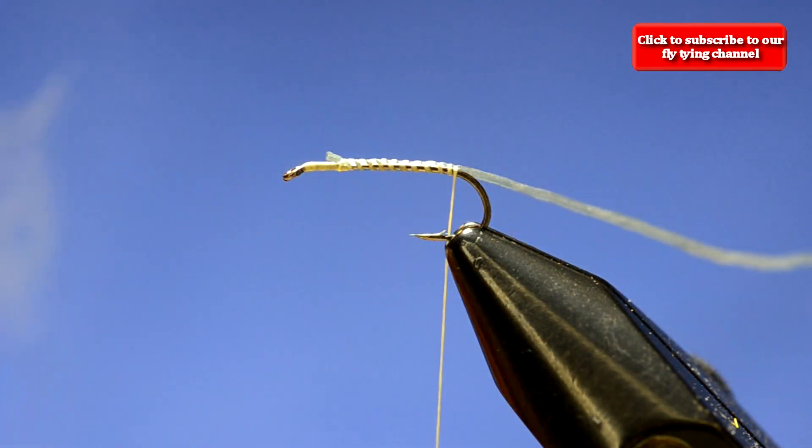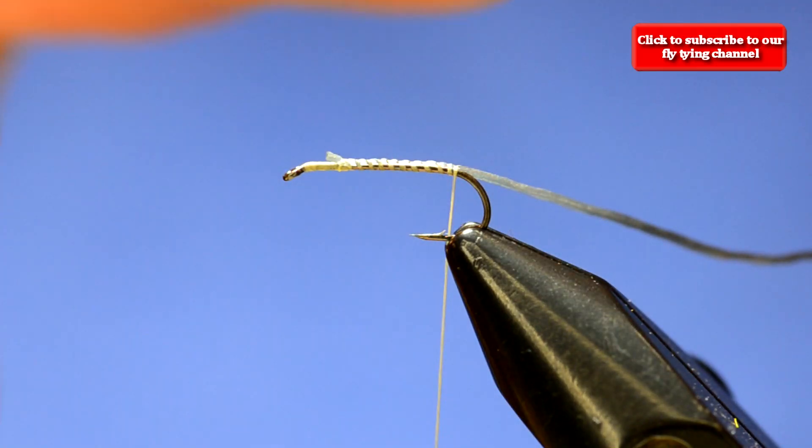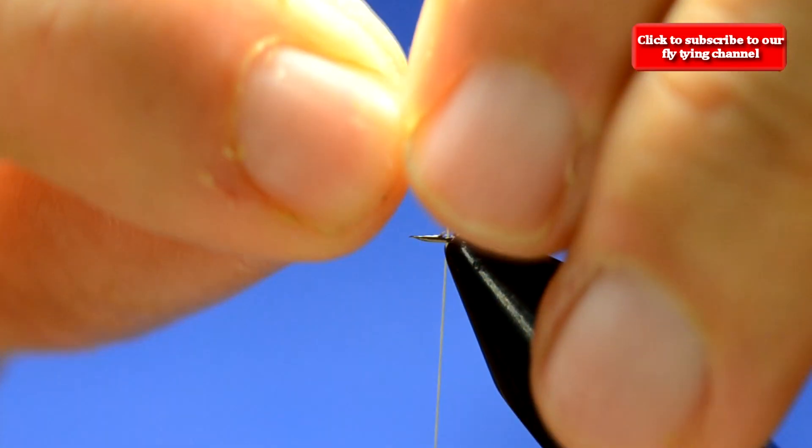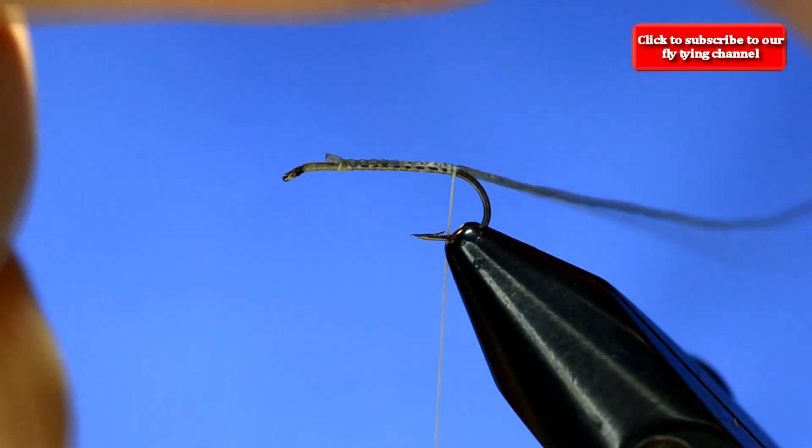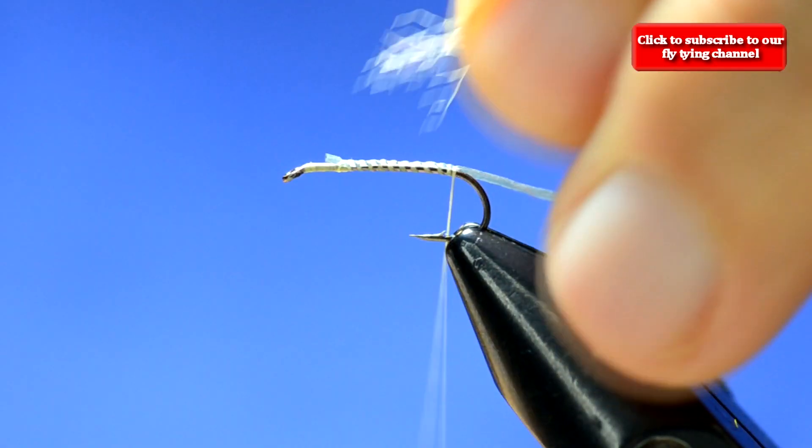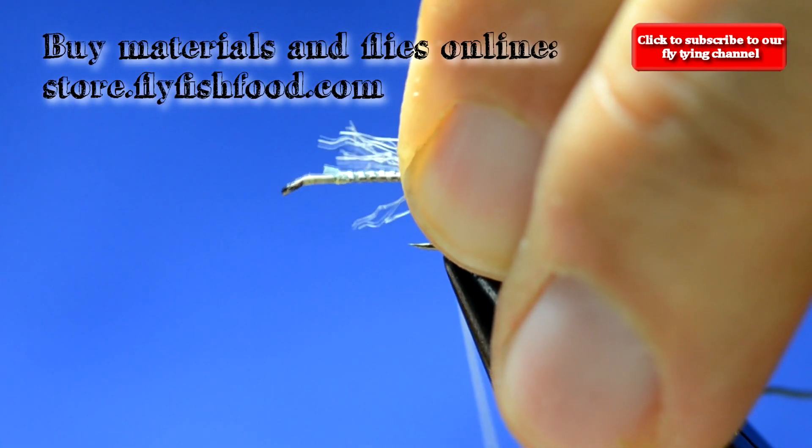Now let's take my shuck material. I use about a quarter of the amount there, so we're talking about 12 fibers or so. I want those to go up into the thorax area because we're going to tie them in the length of the hook. Just give it a little pinch wrap and lock it down.